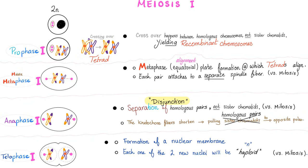Tell me about prophase one. You have the crossing over. Cross over between what? Between the sister chromatids? Oh, shut up. Between homologous chromosomes yielding recombinant chromosomes. These are the new creation. Next, you have metaphase one. Metaphase M for the middle. Alignment, equatorial plate formation at which the tetrads will align. Notice that each pair attached to a separate, a separate spindle fiber, unlike mitosis. Anaphase, ana away, separation.